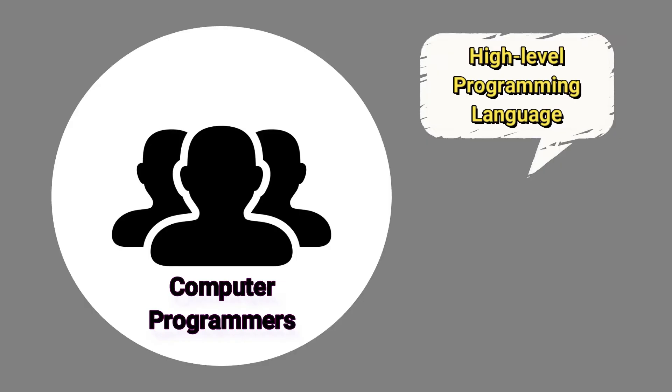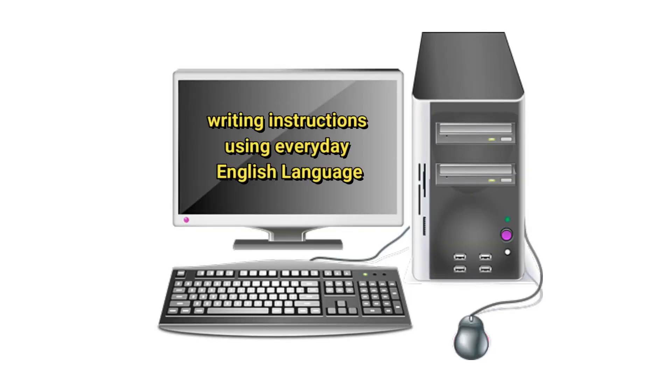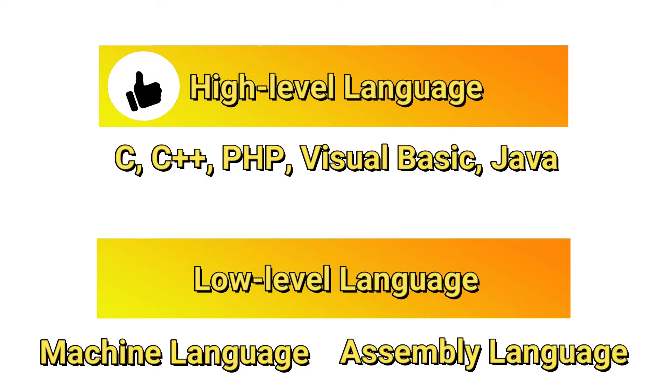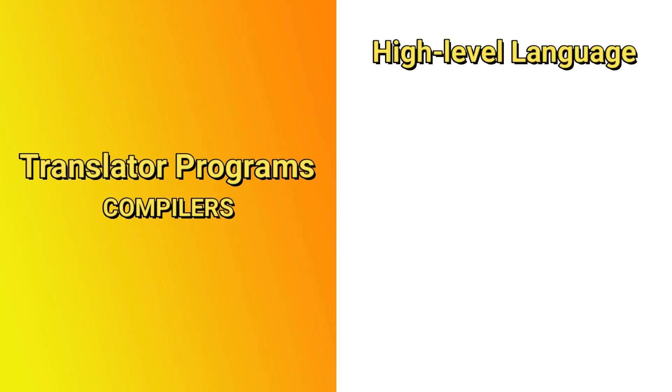Computer usage increased rapidly with the advent of assembly languages, but programmers still had to use many instructions to accomplish even the simplest tasks. So to speed up the programming process, high-level languages were developed in which single statements could be written to accomplish substantial tasks. High-level languages allow programmers to write instructions that look almost like everyday English and contain commonly used mathematical notations. High-level languages are preferable to machine and assembly language. C, C++, Microsoft Visual Basic, and Java are among the most widely used high-level programming languages. Translator programs called compilers convert high-level language programs into machine language.